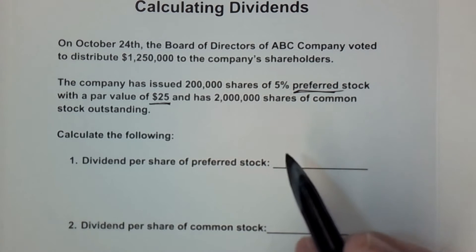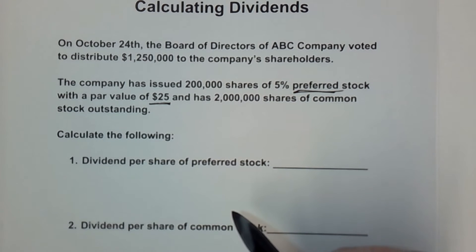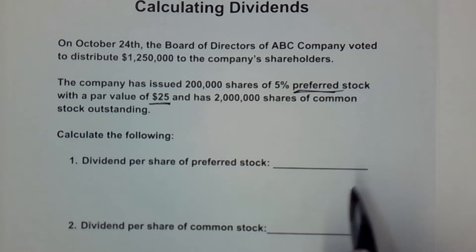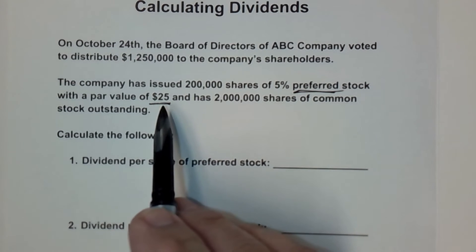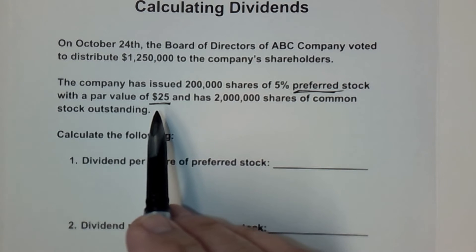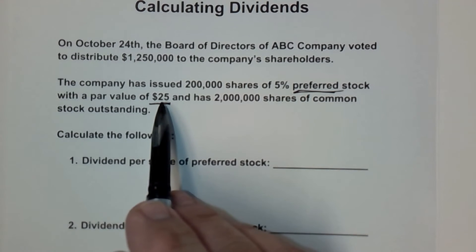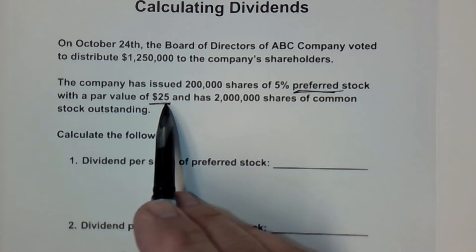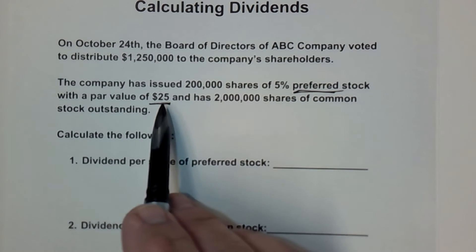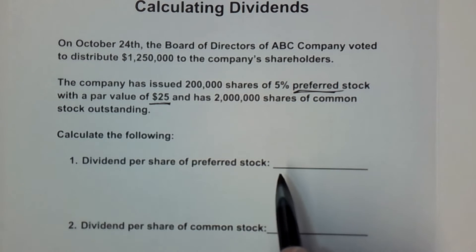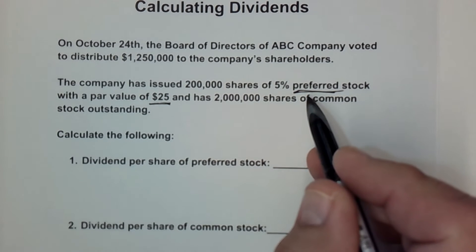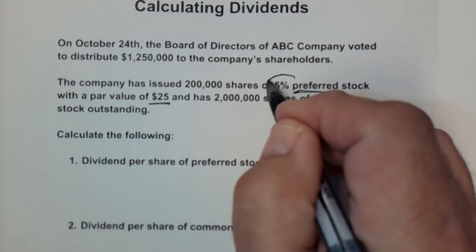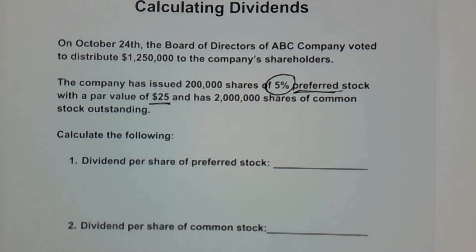Par value is something I've discussed in other videos. It's essentially the legal value of the stock, set by the board of directors, and does not necessarily have anything to do with the market value of the stock. So you may or may not be able to purchase preferred stock in this company for $25 a share — chances are the market price will be different. But we use the par value to calculate the dividend for preferred stock, which will receive 5% of the par value.